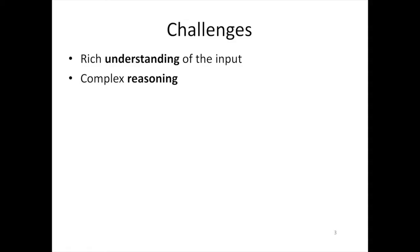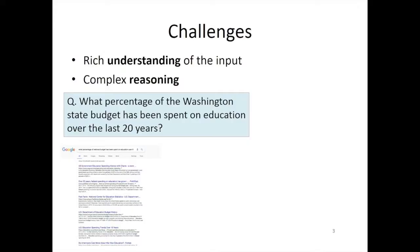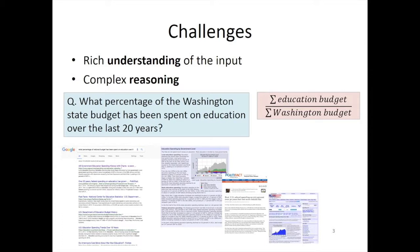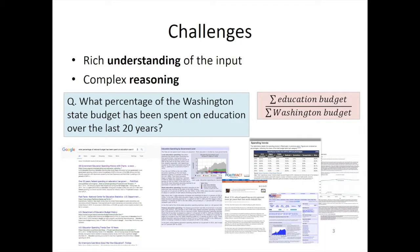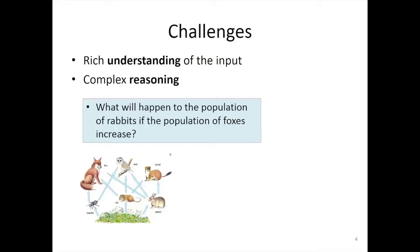But we really need to address two important challenges for these systems to be fully applicable. The first challenge is to have rich understanding of the input. The second challenge is the ability to do complex reasoning. For example, if you ask Google what percentage of the Washington state budget has been spent on education in the past 20 years, you get a list of relevant webpages, and it's the user's job to connect them and find the answer. What we want is a QA system that can look at different data sources — graphs, diagrams, tables — and do complex multi-step reasoning to answer the question.